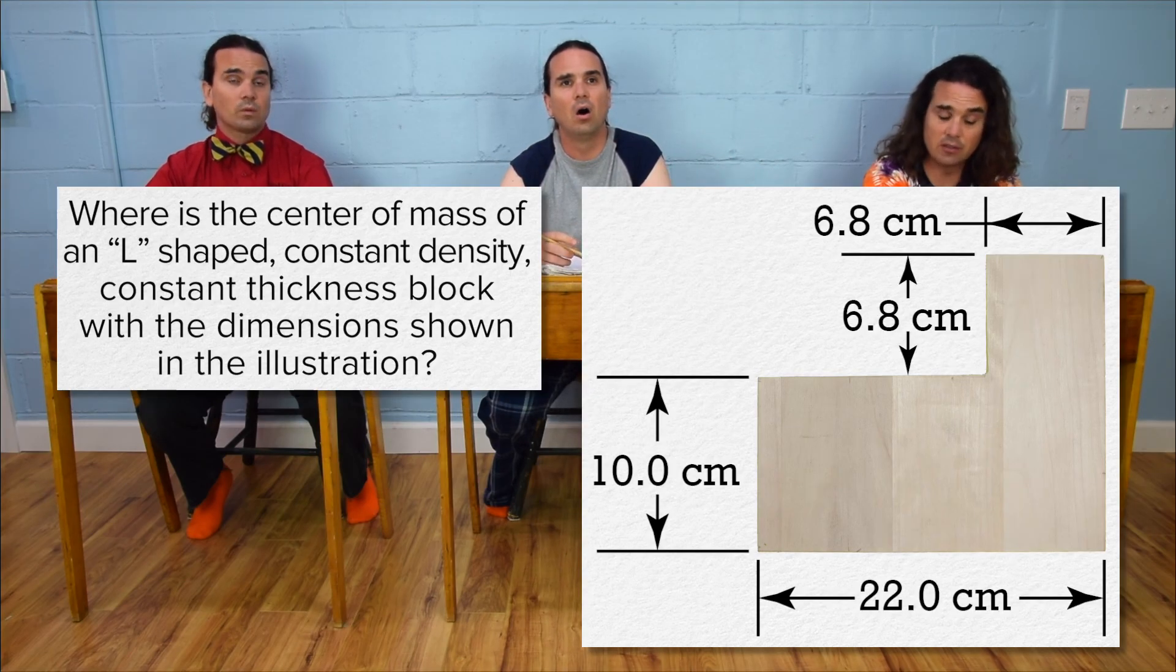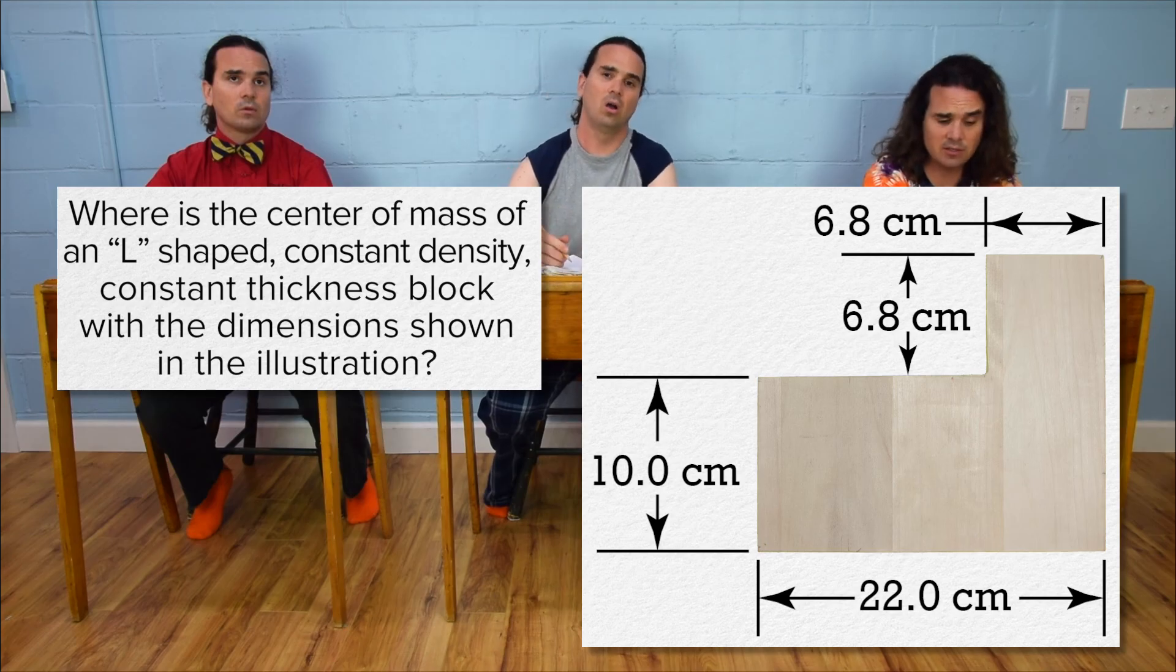Where is the center of mass of an L-shaped, constant density, constant thickness block with the dimensions shown in the illustration?